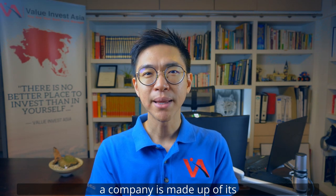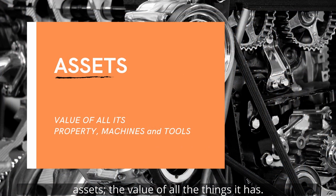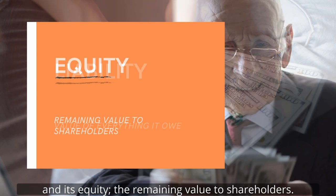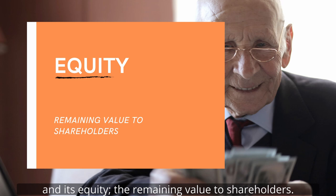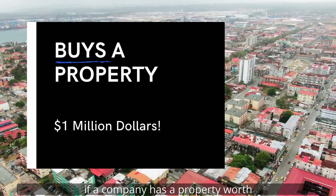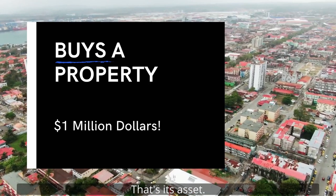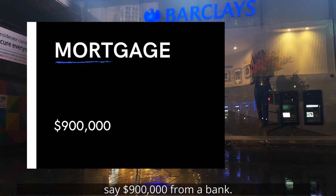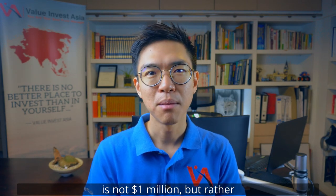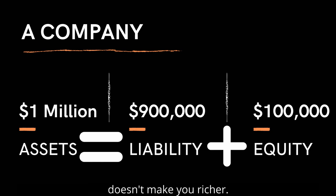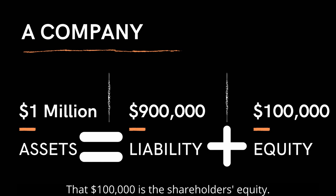Let's take a step back. A company is made up of its assets — the value of all the things it has — its liabilities, the value of what it owes to others, and its equity, the remaining value to shareholders. These three components make up the balance sheet. For example, if a company has a property worth $1 million, that's its asset. But they can finance that property with a loan of $900,000 from a bank — that's the liability. So the net value of the company is not $1 million, but rather only $100,000. After all, borrowing more money doesn't make you richer. And that $100,000 is the shareholder's equity.